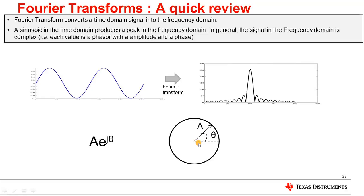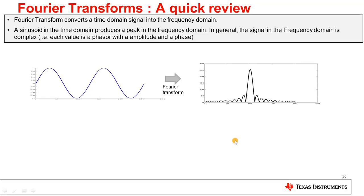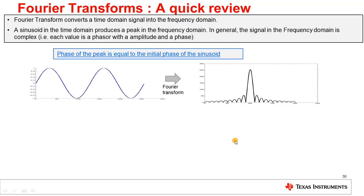Alternatively, a complex number can also be pictorially represented as a phasor, which is a vector with a length corresponding to the amplitude A and a direction corresponding to the phase θ. Throughout this series, we will stick with this phasor representation since it has a more intuitive feel. An important property of the Fourier transform is that the phase of the peak corresponds to the initial phase of the sinusoid. So this sine wave over here starts with a certain initial phase, and that phase is reflected in the phase of this peak in the Fourier transform.